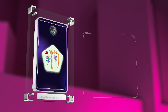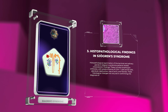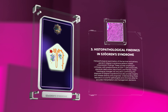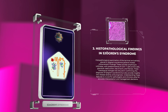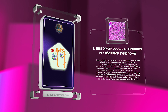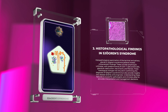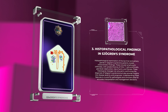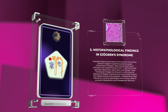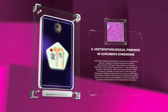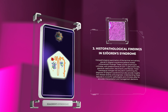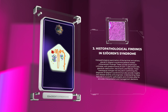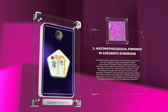Histopathological examination of the lacrimal and salivary glands in Sjogren's Syndrome patients reveals characteristic findings. These include lymphocytic infiltrates with predominance of CD4+ T cells and B cells, glandular destruction, loss of acini, and fibrosis. These histological changes not only aid in confirming the diagnosis but also provide insights into disease severity, prognosis, and management decisions.